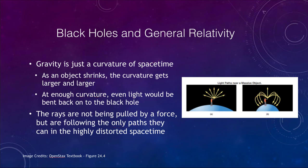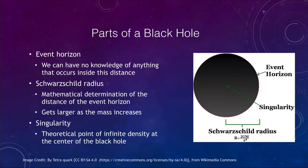So what is a black hole — what are the parts of a black hole? Black holes are actually relatively simple objects in that they don't have a lot of parts to them. They only have a few things that we can actually know about them. One we talk about is the event horizon. The event horizon is sometimes called the surface of the black hole.